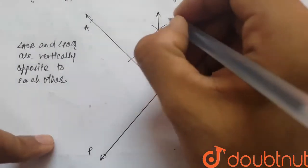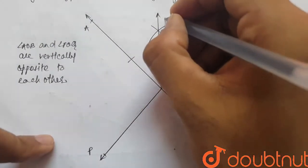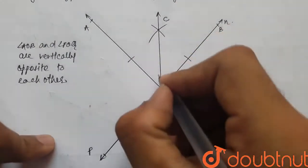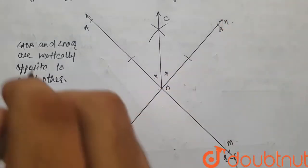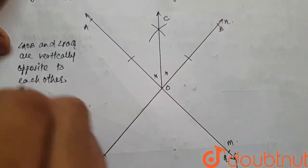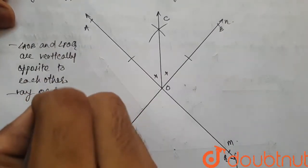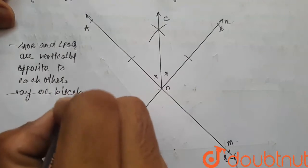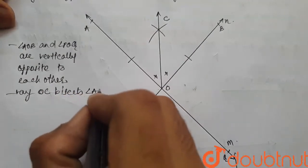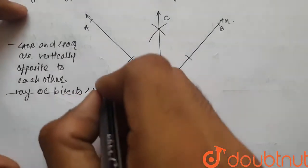So let's call this C. So Ray OC bisects angle AOB.